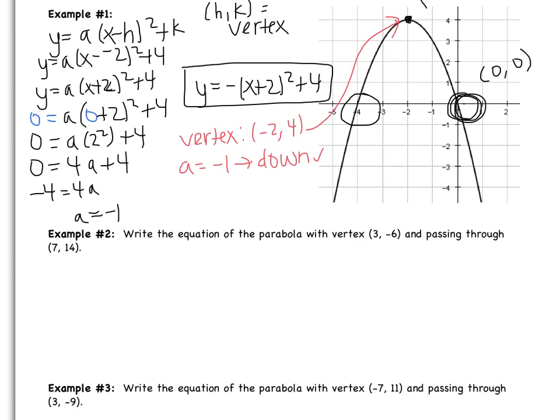Let's write the equation of the parabola with a vertex of (3, negative 6) and passing through (7, 14). So I'm going to start by writing the general form, and then I'm going to substitute in the vertex. So y equals a(x subtract 3) squared subtract 6.